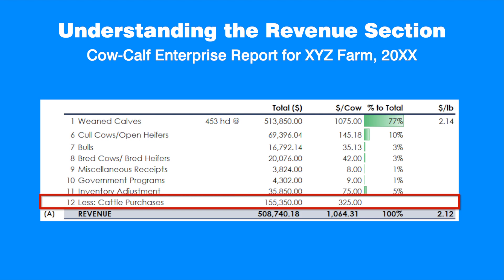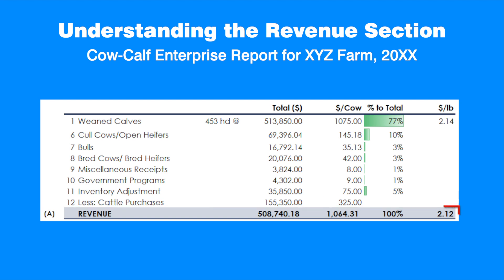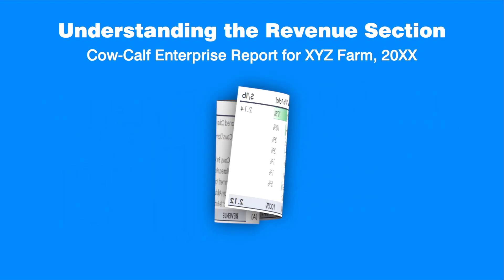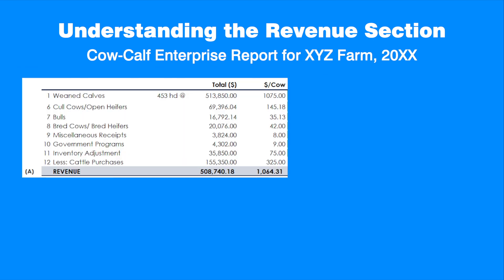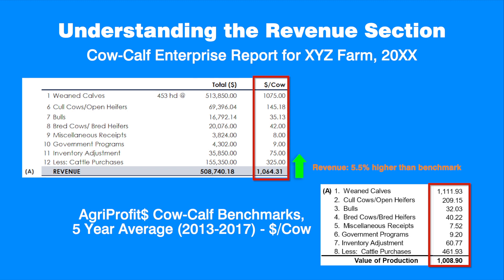The revenue section also reports cattle purchases, which are subtracted from the revenue. In our example, they are $325 per cow. In total, this cow-calf enterprise generates about $1,064.31 per cow, or $2.12 per pound weaned. Comparing with AgriProfit's cow-calf benchmarks, the producer's revenue is higher by about 5.5%, mostly due to cattle inventory. The producer's weaned calf income is actually lower than the benchmark by about 3.3%.